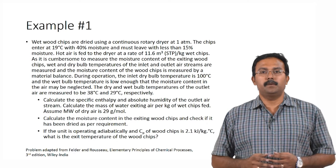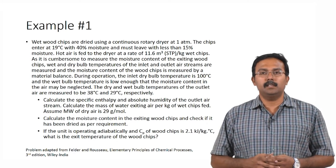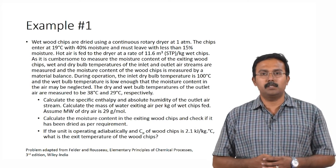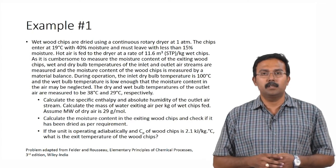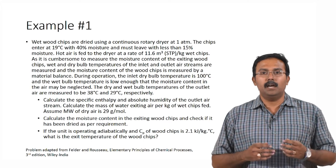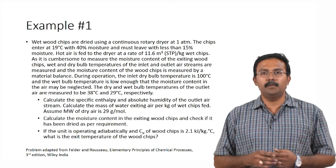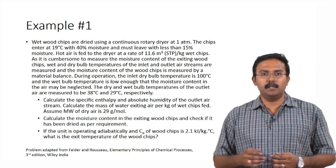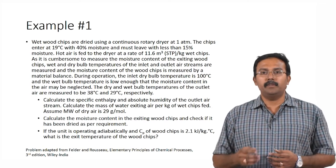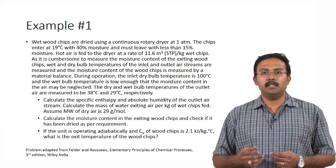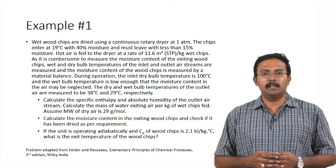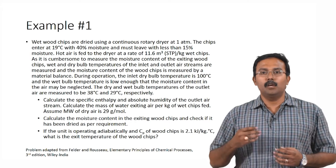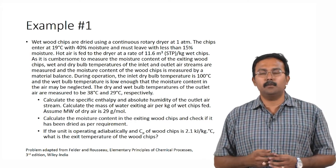Here is the first example. Wet wood chips are dried using a continuous rotary dryer at 1 atmosphere. The chips enter at 19°C with 40% moisture and must leave with less than 15% moisture. Hot air is fed at 11.6 m³ STP per kilogram of wet chips. The inlet dry bulb temperature is 100°C and the wet bulb temperature is low enough that moisture in the inlet air may be neglected.